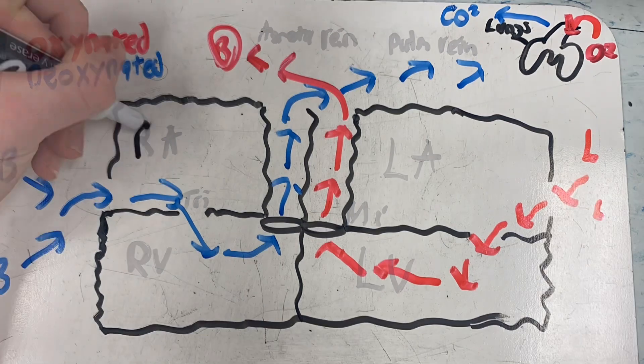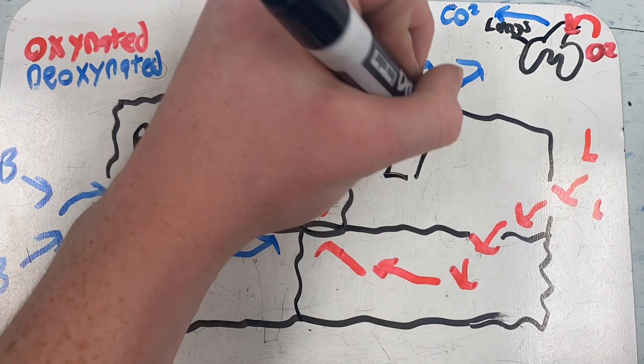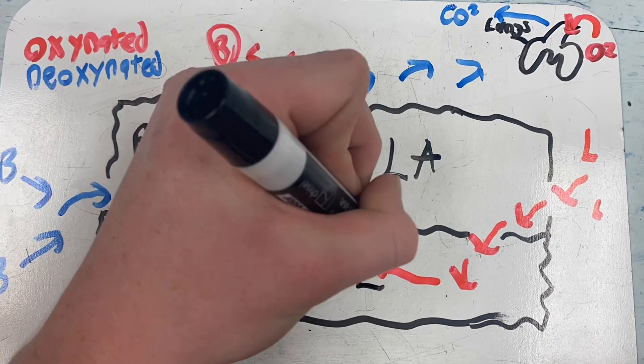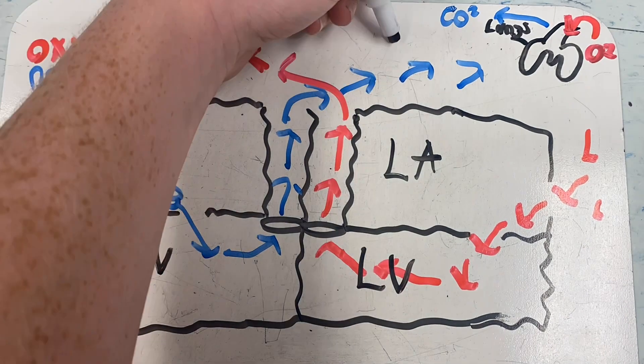With some of the valves, you have the tricuspid valve, you have the mitral valve, and then you have the aortic valve, and the pulmonary.